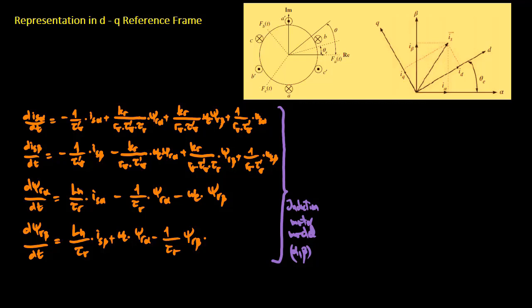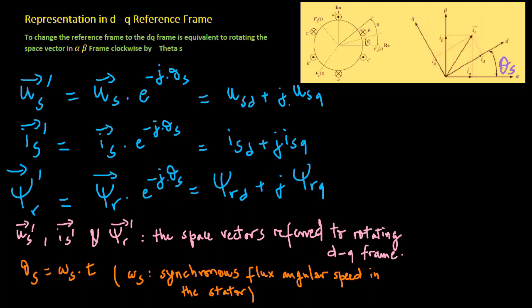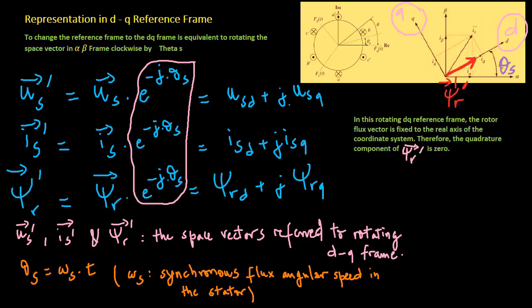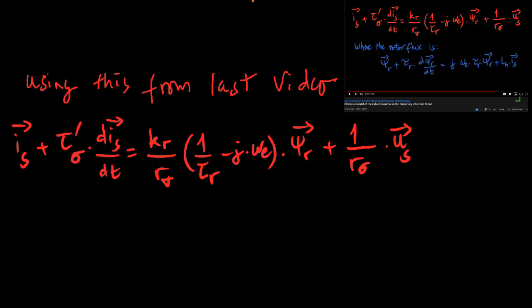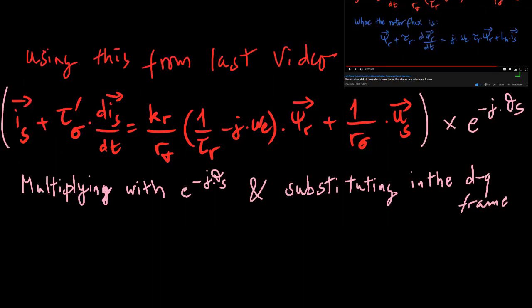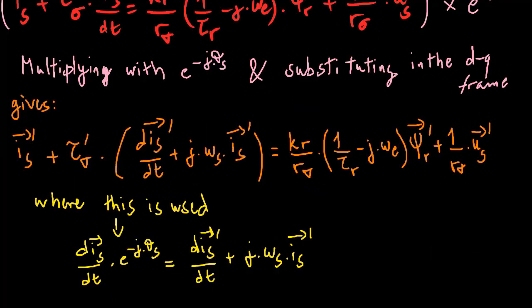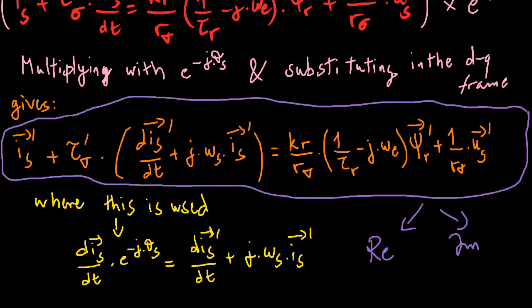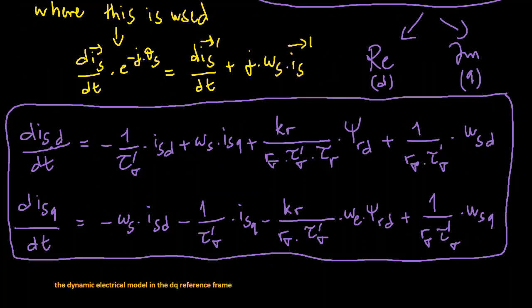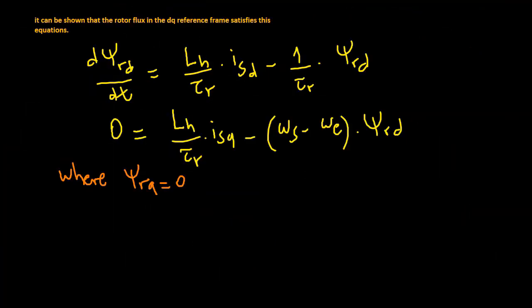In the last video, we derived the electrical model of the induction motor in the alpha-beta reference frame, described by four differential equations. Changing the reference frame to the DQ frame is equivalent to rotating the space vector in the alpha-beta frame clockwise by theta-s. In this rotating DQ reference frame, the rotor flux vector is fixed to the real axis of the coordinate system, so its quadrature component is zero. Based on the real and imaginary components of this equation, the dynamic electrical model in the DQ reference frame is obtained. It can be shown that the rotor flux in the DQ reference frame satisfies these equations.